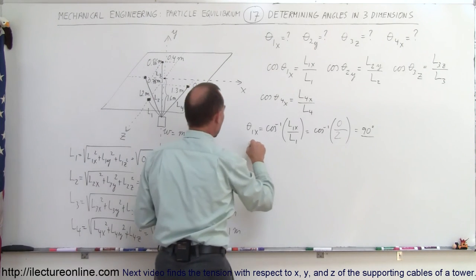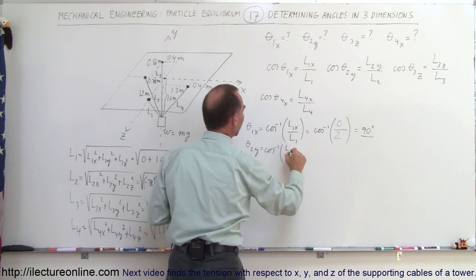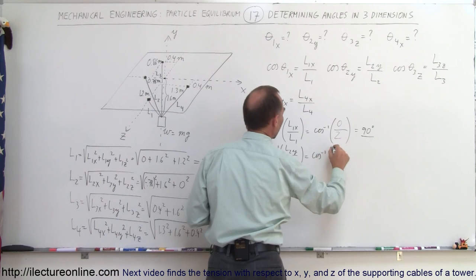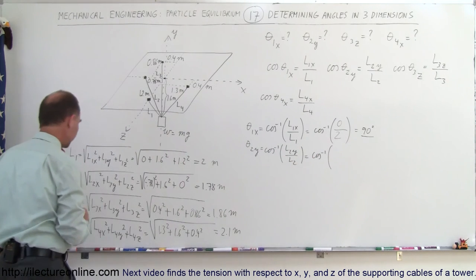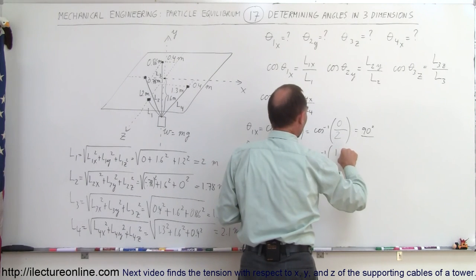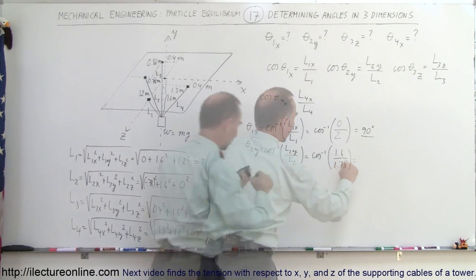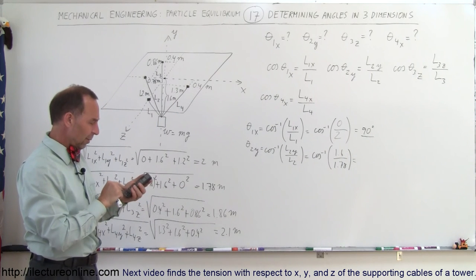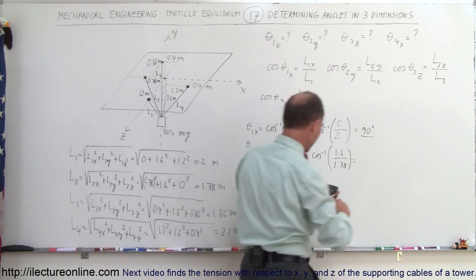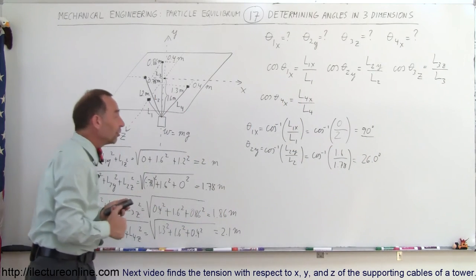For theta sub 2 relative to the y-axis, it equals the arccos of L2 in the y-direction divided by L2. The y-direction component is 1.6 for all cables, so we have arccos of 1.6 divided by L2, which is 1.78. So 1.6 divided by 1.78, taking the arccos, gives us 25.98 degrees, approximately 26.0 degrees. That is the angle between L2 and the y-axis.